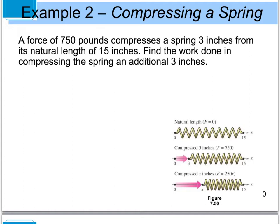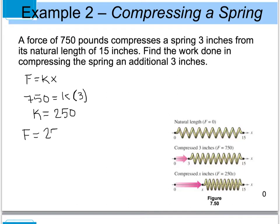Since we're dealing with a spring, we use Hooke's Law: F equals KX. We know that F at 3 inches equals 750 pounds, so 750 equals K times 3, giving K equals 250. Therefore F equals 250X. This gives us the force as a function of X, which varies depending on what we plug in — this is why we use the variable force work equation.